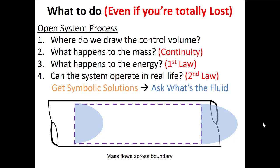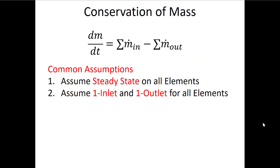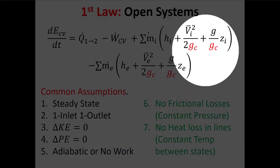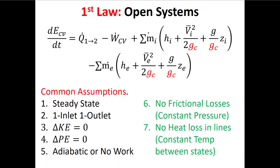These will be our steps. Conservation of mass: we'll often assume things are at steady state with one inlet and one outlet. Notice that assuming something often is not the same as assuming it every time — these are common assumptions, not ones we make every time. Then we go to a first law analysis. Here I'm writing the first law in imperial units where I divide by GC for kinetic and potential energy. We'll often assume steady state, one inlet, one outlet.